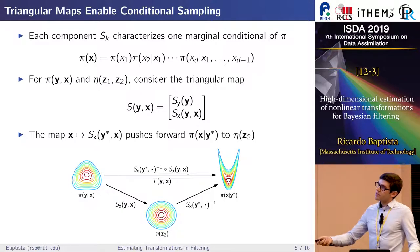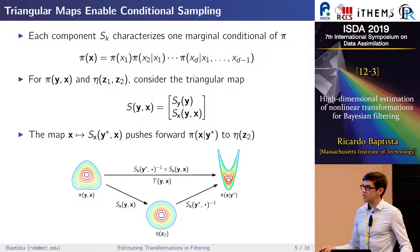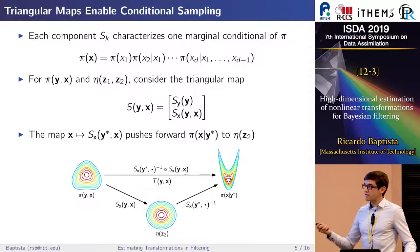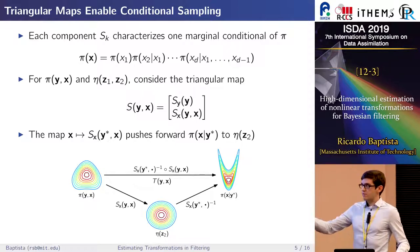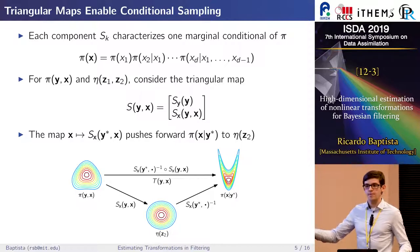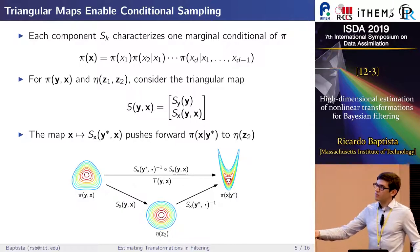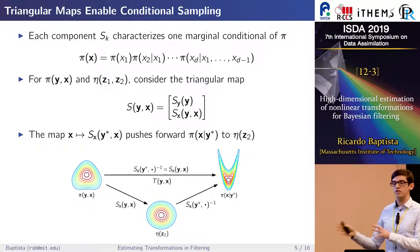Fixing y* in the map characterizes the conditional distribution of x given that particular realization. To sample from that conditional, we invert the relation: since S_x(y*) pushes forward the conditional to a standard normal, if we sample from a standard normal and evaluate the inverse map, we get a sample from the conditional. Composing these maps gives us a direct coupling from the joint density to the conditional distribution through the reference.